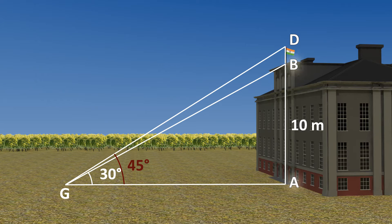In the above figure, AB denotes the height of the building, BD the flag staff and G the given point. So, we see there are two right triangles GAB and GAD.